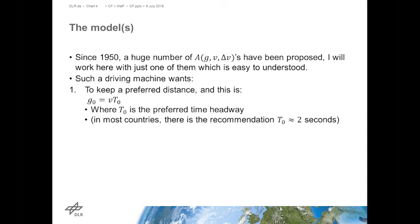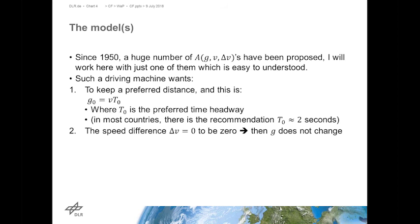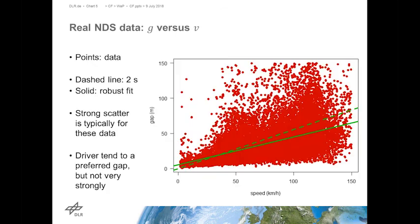I will work with one model that is quite easy to understand. The driving machine wants to keep a preferred distance — you learn in driving school to keep something like two seconds of preferred time headway to the vehicle in front. This time headway is related to real distance by the simple equation: distance equals speed times time headway. The second point is that if the driver manages to keep the speed difference at zero, the distance to the vehicle in front does not change. This is the garden-of-eden state: distance equals preferred distance, speed difference is zero, no further action needed.